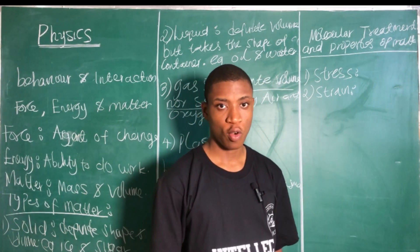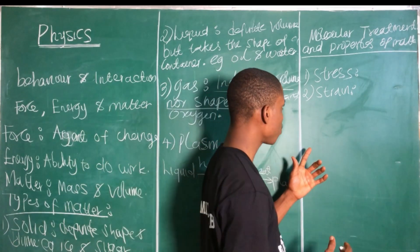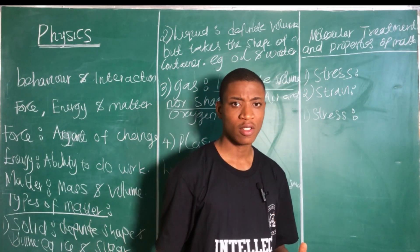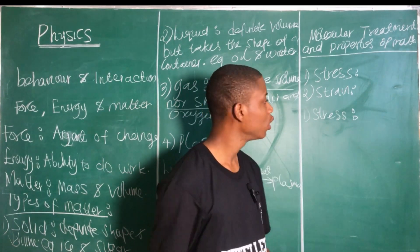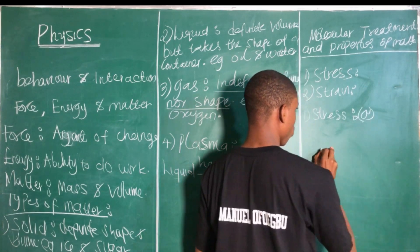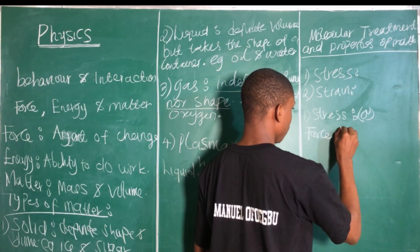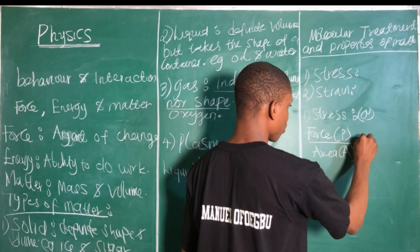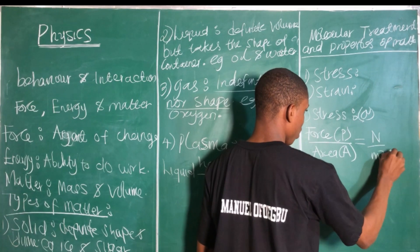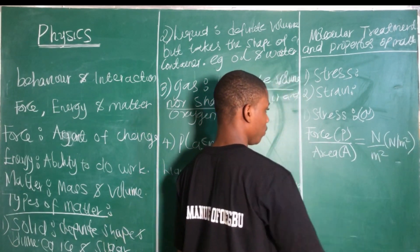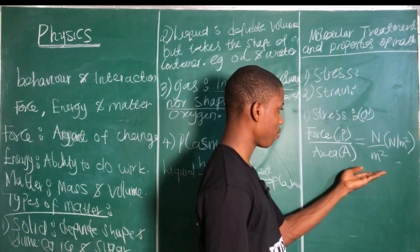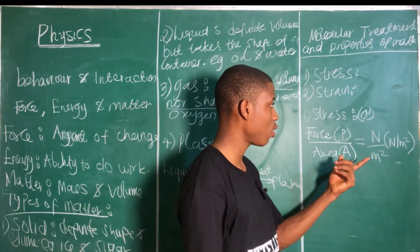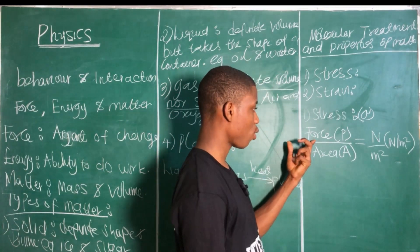Let's talk about stress. Stress is the force acting on a material per unit area, signified by the formula: stress = force divided by area. Stress is measured in newtons per meter squared, which is equivalent to one pascal. So another unit for stress is the pascal.